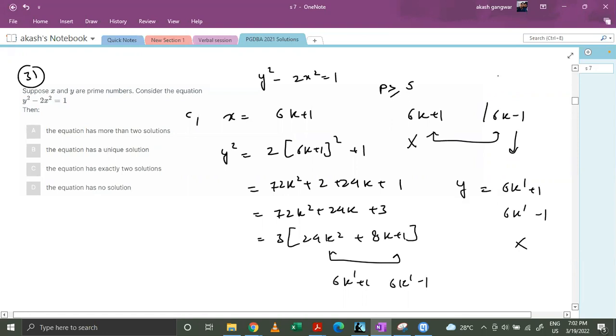Now we have two prime numbers 2 and 3 which are less than 5. So let's put y as 2. We have 4 minus 2x² equals to 1. This makes x² equals to 3/2, which is not possible.